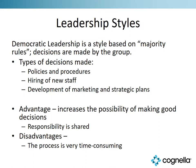Democratic leadership is based on majority rules and decisions are made by a group. Examples of decisions successful with this style include policies and procedures, hiring new staff members, and developing marketing and strategic plans. A group interview or panel interview — where multiple people interview a candidate and decide as a group who to hire — is a common example. Advantages include increased possibility of making good decisions and shared responsibility; the disadvantage is it can be very time consuming.